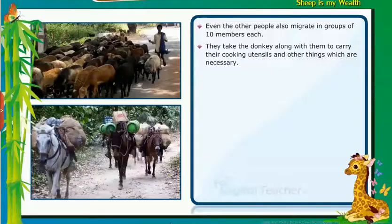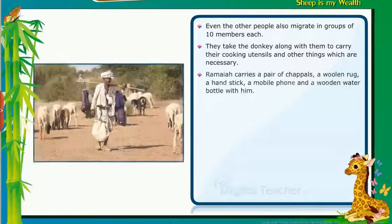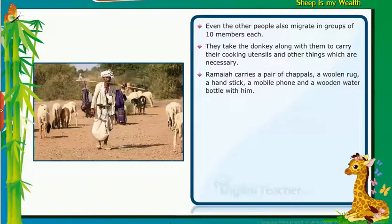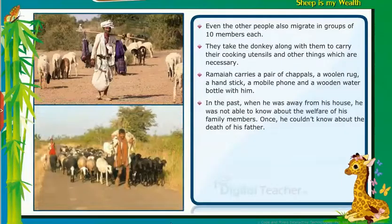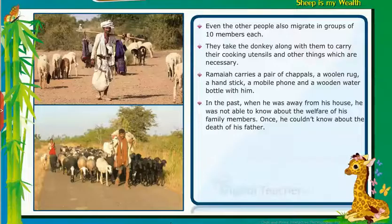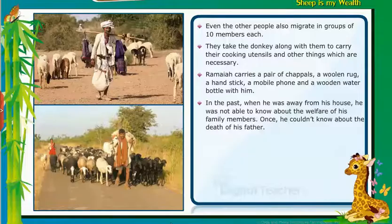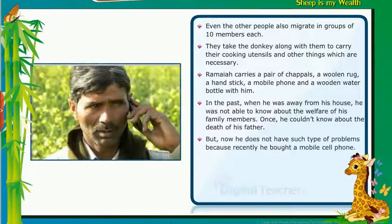They take the donkey along with them to carry their cooking utensils and other necessary things. Ramaya carries a pair of chappals, a woolen rug, a hand stick, a mobile phone and a wooden water bottle. In the past, when he was away from home, he was not able to know about the welfare of his family members — once he couldn't know about the death of his father. But now he does not have such problems because he recently bought a mobile phone.